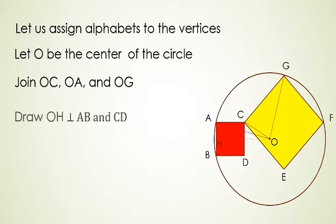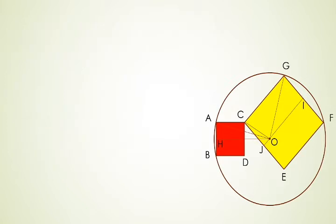Draw OH perpendicular to AB and CD. Draw OI perpendicular to GF and OJ perpendicular to CA. Now these constructions will help us in finding the area of the circle. First we will find the radius or square of the radius.